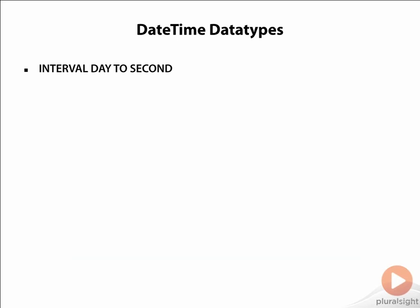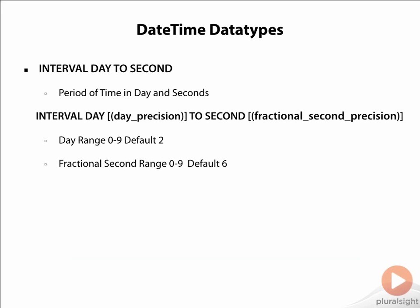INTERVAL DAY TO SECOND is used to express an interval of time in days and seconds. It is useful when we want to get time differences between two timestamps down to fractional seconds. The syntax for declaring a variable of this type is INTERVAL DAY with day precision TO SECOND with fractional second precision. The day precision ranges from 0 to 9 with a default of 2, and the fractional second range is from 0 to 9 with a default of 6.